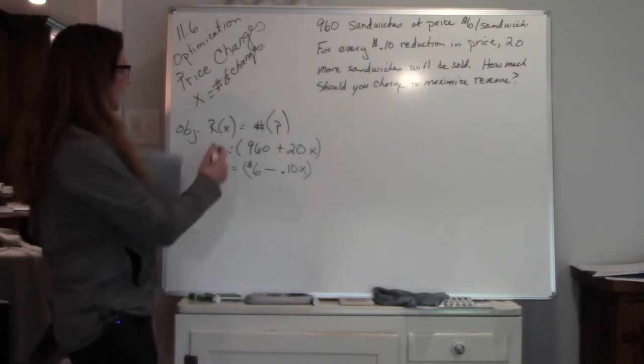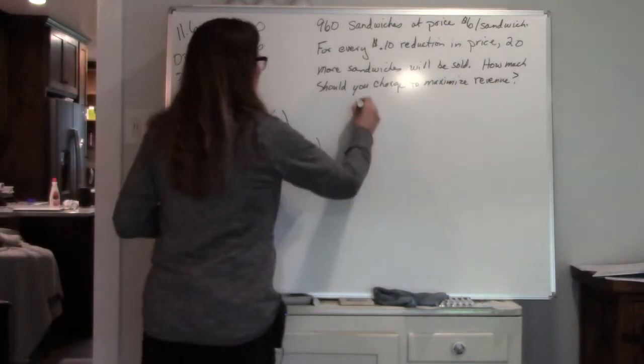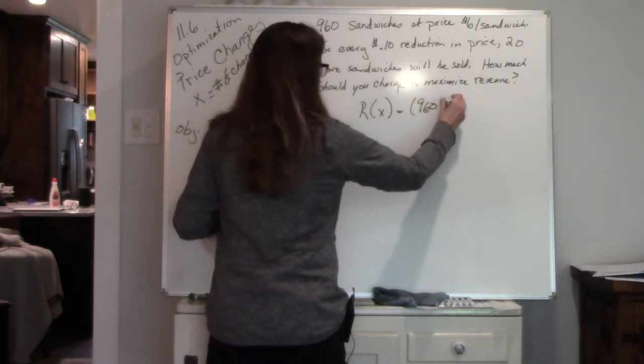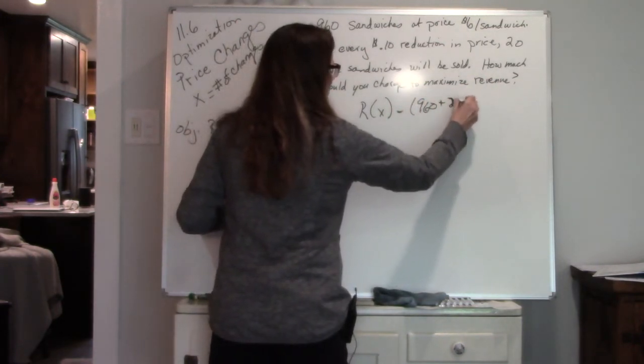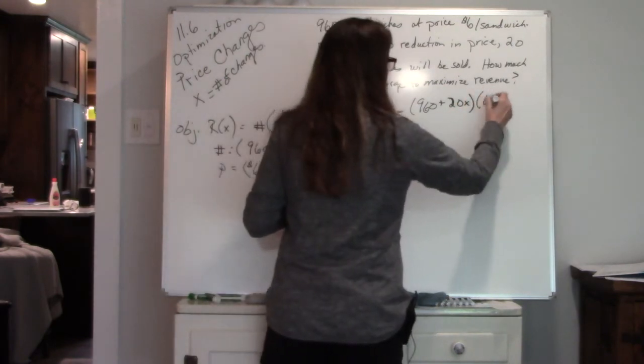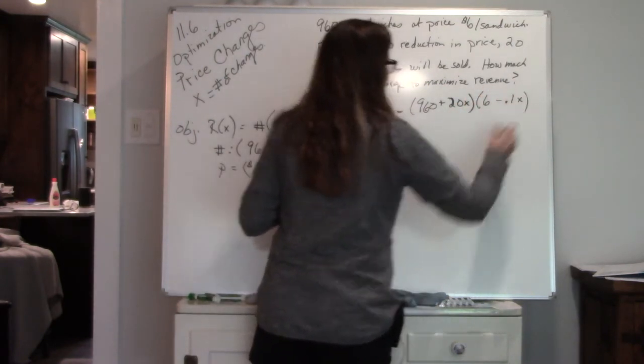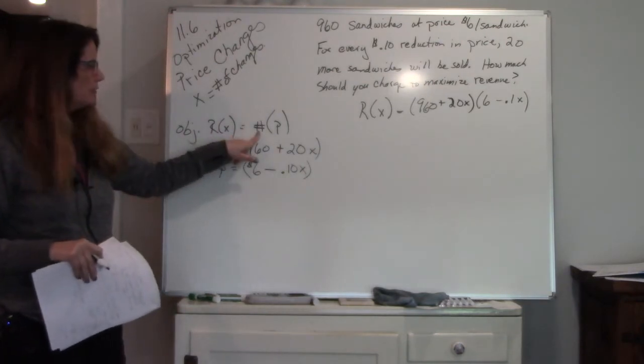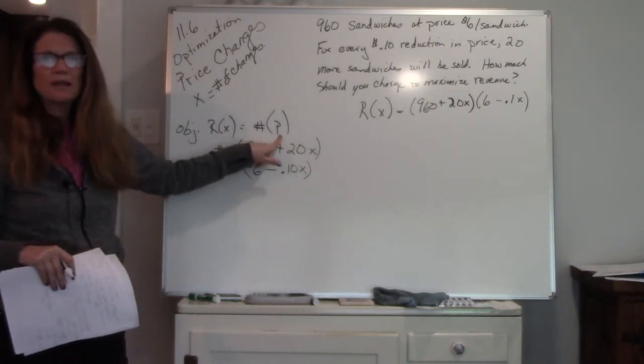All right, so now we have our revenue function. Our revenue function is the number of sandwiches times the price of the sandwich. We're just setting up revenue. Number of sandwiches times the price of the sandwich. So now we have to do FOIL.